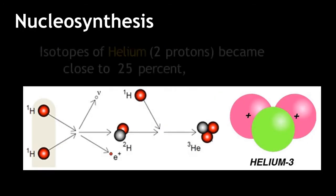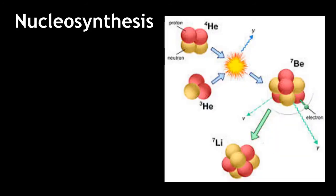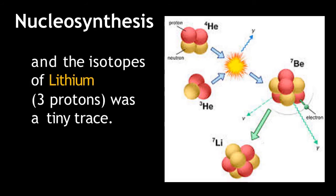Isotopes of helium, which have two protons, became close to 25%. And the isotopes of lithium, which have three protons, were only a tiny trace.